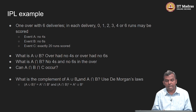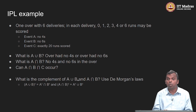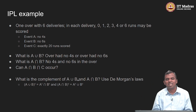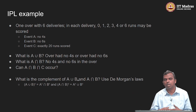A union B is 'the over had no 4s or the over had no 6s.' Suppose a boundary was scored and no 6s were scored — A did not occur, but B occurred, so A union B still occurred. For A intersect B — no 4s and no 6s — the over should not have any hit that went across the rope.